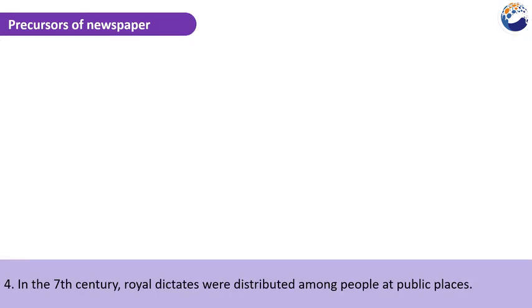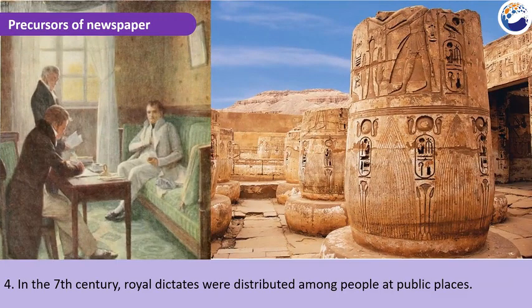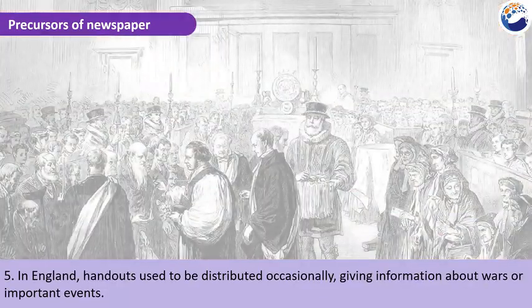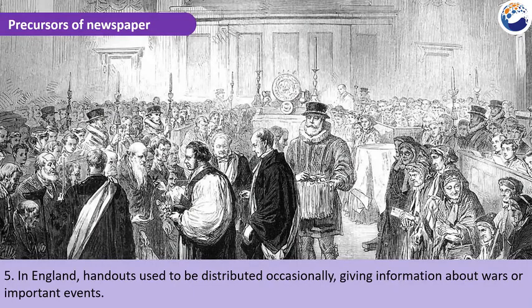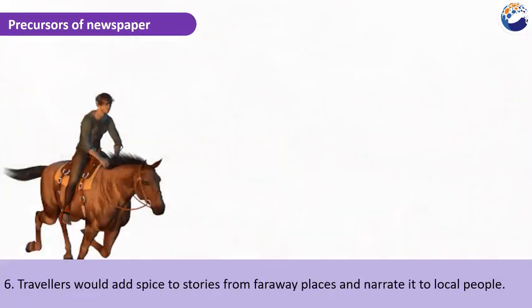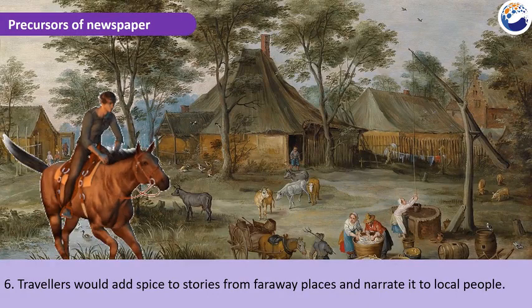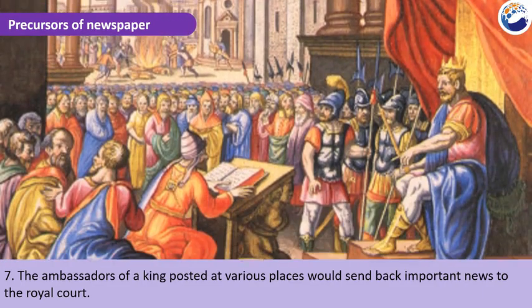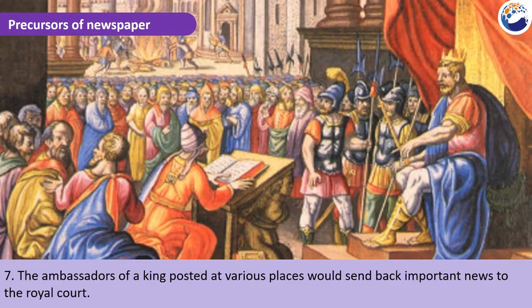In the 7th century, royal dictates were distributed among people at public places. In England, handouts used to be distributed occasionally, giving information about wars and important events. Travelers would add stories from faraway places and narrate them to local people. The ambassadors of a king posted at various places would send back important news to the royal court.